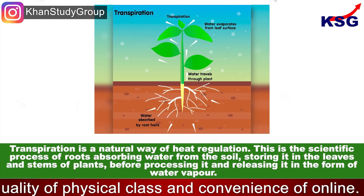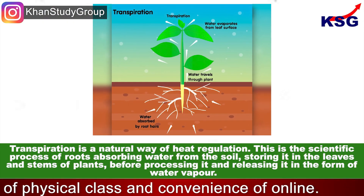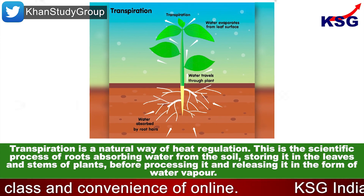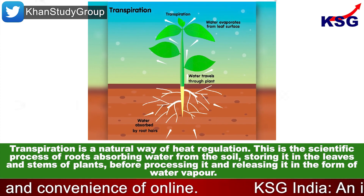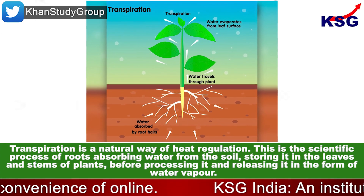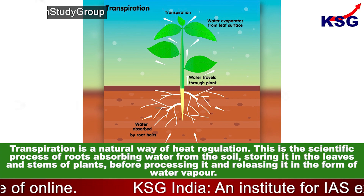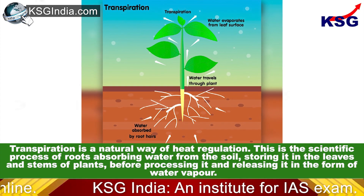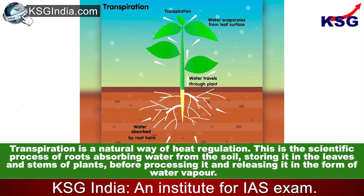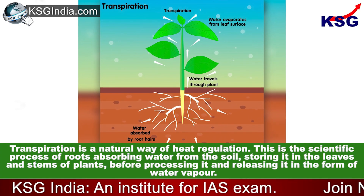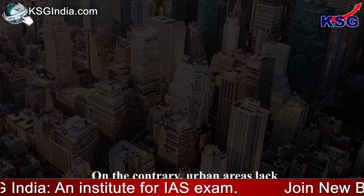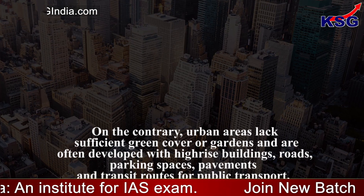Transpiration is a natural way of heat regulation. This is the scientific process of roots absorbing water from the soil, storing it in the leaves and stems of plants before processing it and releasing it in the form of water vapour.